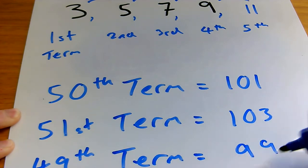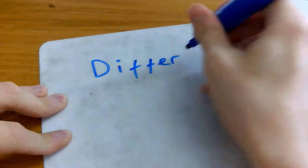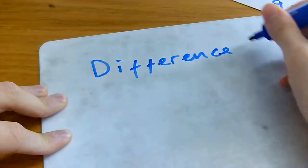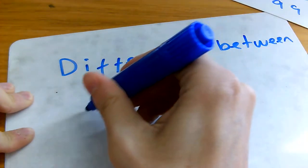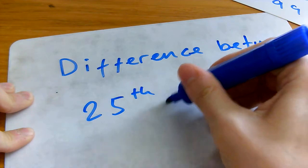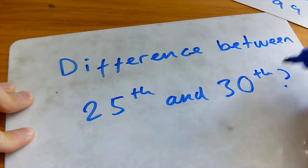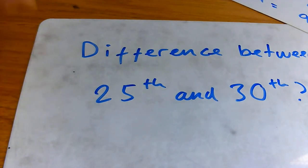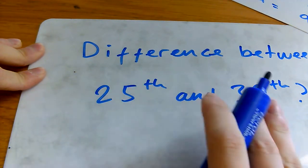Now, what if I asked you what the difference between the, let's say the 25th and 30th terms of the sequence would be? Now, the answer is not 5. I'm not asking for the difference between 25 and 30, the 25th term and the 30th term.